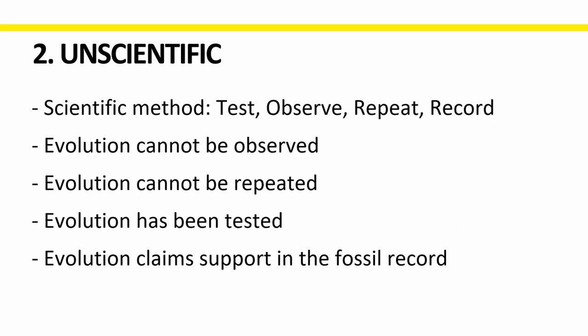The second reason that evolution is false is that it is unscientific — and this might surprise you. The scientific method is a method of testing, observing, repeating, and recording. We know gravity is true because we can throw something up and it comes down, and we can do it again and again. We test, repeat, observe, and then record how far it falls and how quickly to get the speed of gravity.